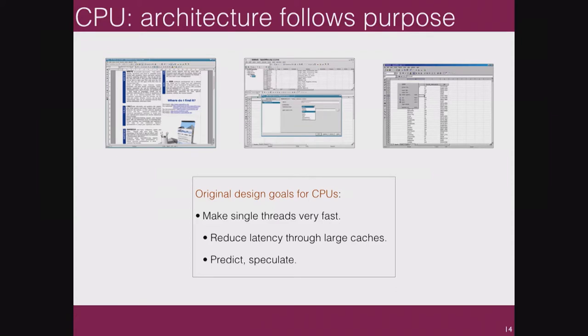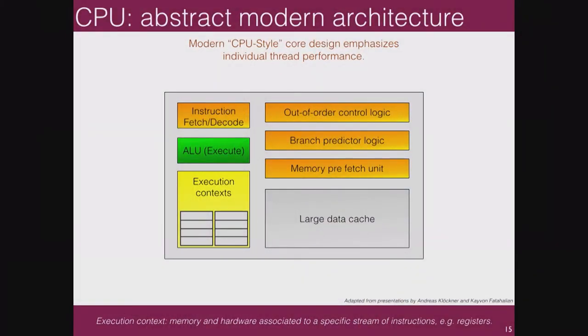Let's talk at the 10,000-foot level. What's the main driver of CPU design? Originally it was the supremacy of a thread — you wanted the thread to be uninterrupted and as high performance as possible, from the days of single-core single-threaded machines. The goal was to make single threads very fast, reduce latency through large caches, and use prediction and speculation for the instruction stream. So you have not just an instruction fetch/decode unit but also silicon devoted to out-of-order control logic, branch prediction logic, and extensive silicon devoted to memory prefetch and caching — with a limited number of ALUs actually doing the floating-point algebra.